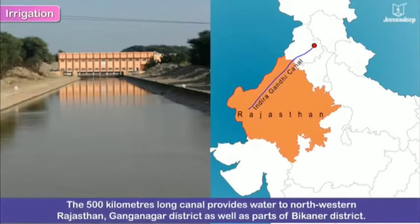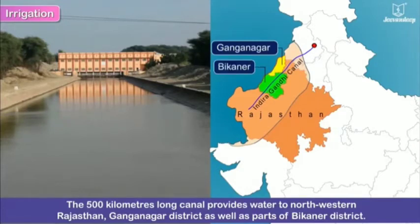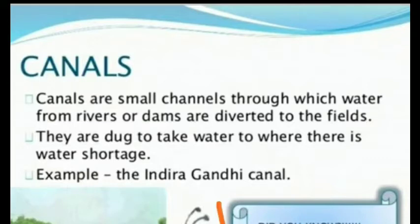From which river does the Rajasthan Canal start? From the Sutlej River. Now tell me, what is a canal? Canals are small channels through which water from rivers or dams is diverted to the fields. They are dug to take water to where there is a water shortage. It is not a natural one. Natural ones are streams and rivers, but canals are man-made.